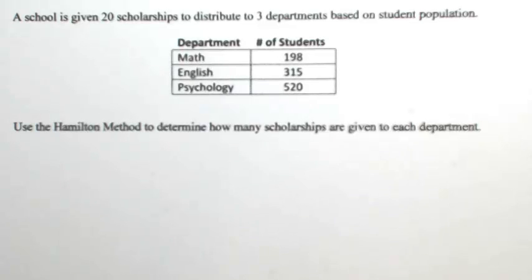A school is given 20 scholarships to distribute to three departments based on student population. Use the Hamilton method to determine how many scholarships are given to each department.